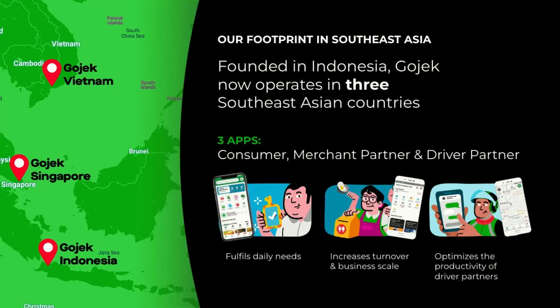Our footprints: we operate mainly in three countries right now, founded in Indonesia. We also operate in Singapore and Vietnam. In Singapore we only have four wheels since the government doesn't allow two wheels there, and in Indonesia it's not really legal to have two wheels as public transport, but the government still allows it anyway because we don't have a better option.